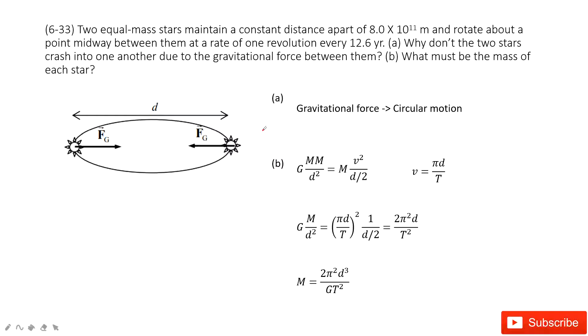In this one, we will consider a two star system. We know there are two equal mass stars, and then they just rotate about a point midway between them at the rate of the revolution.